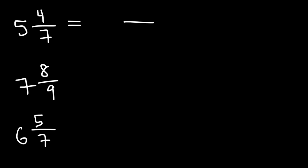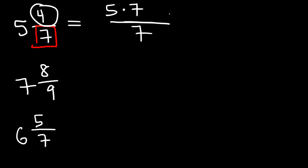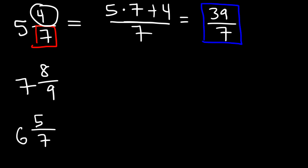For the first example, rewrite the denominator — that's not going to change, so we rewrite seven on the right. Next, multiply five times seven, then add the numerator. Five times seven is thirty-five, and thirty-five plus four is thirty-nine. So five and four-sevenths is equal to thirty-nine over seven.